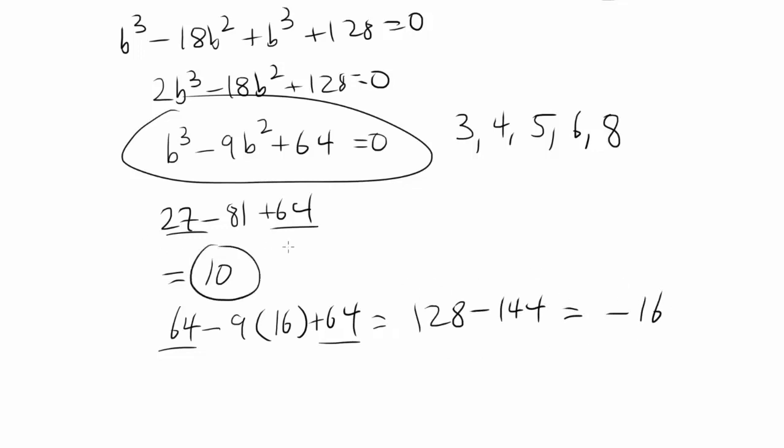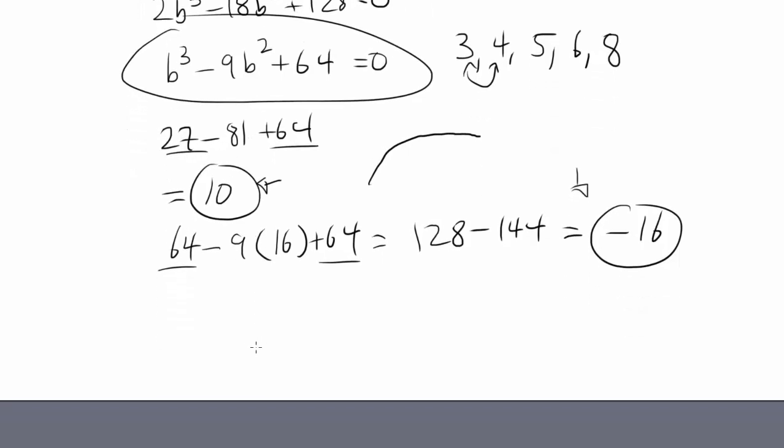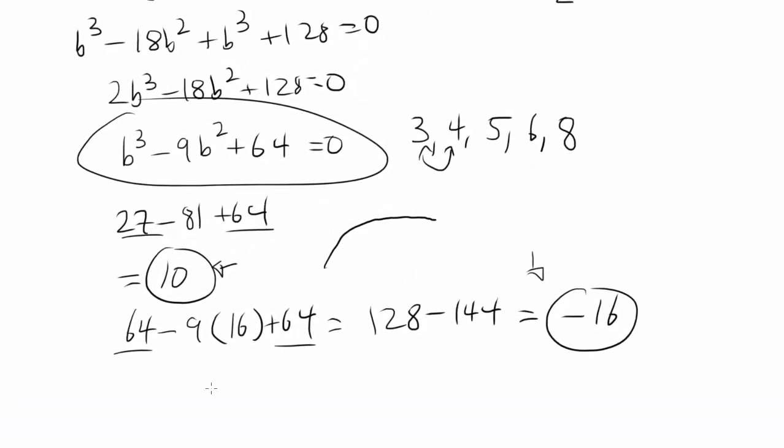So when you plug in 3, you get positive 10. When you plug in 4, you get negative 16. So our answer has to be between 3 and 4. But which one is it? Is it closer to 3 or is it closer to 4? You may say 3 because it's 10, but the concavity of the graph, the curvature of the graph is going to determine which one is going to be the closest. So we can't just look at the numbers and decide.